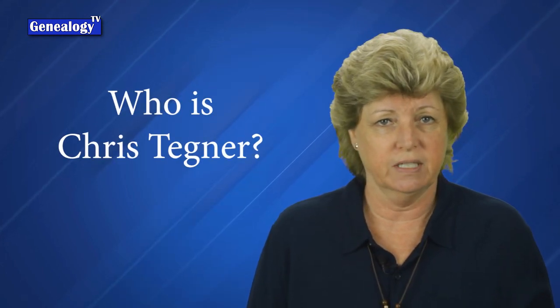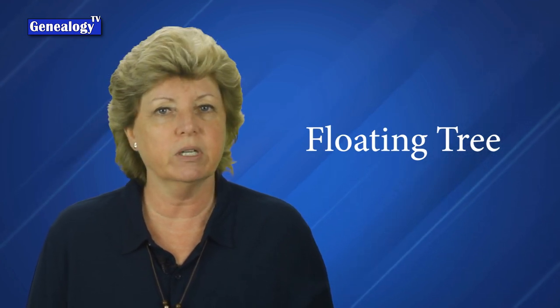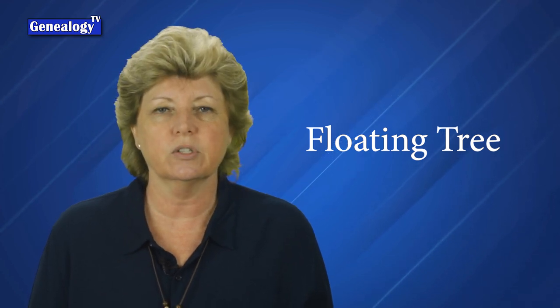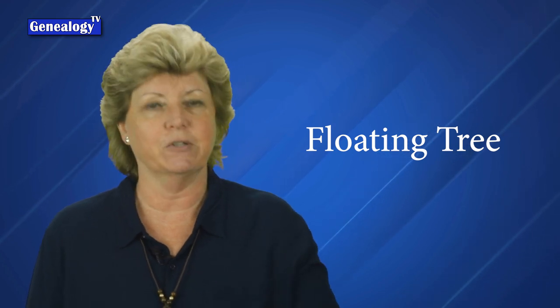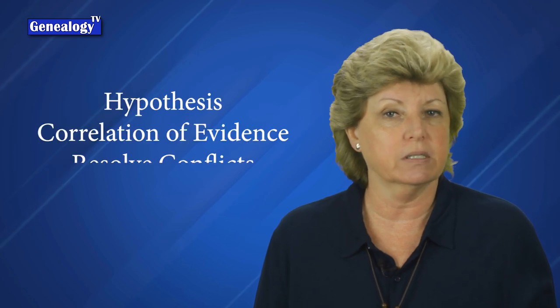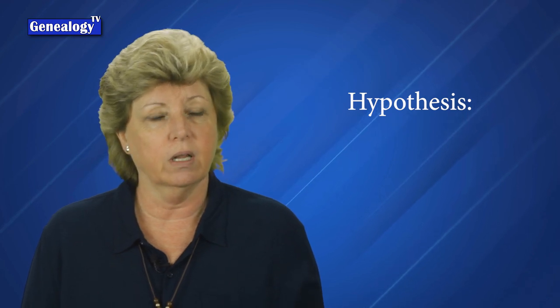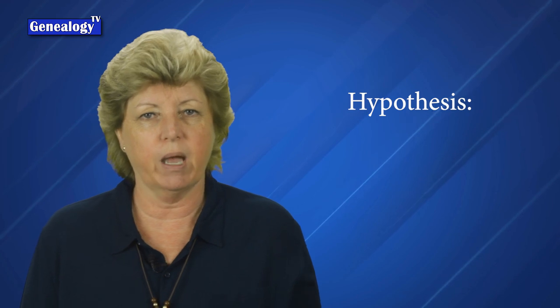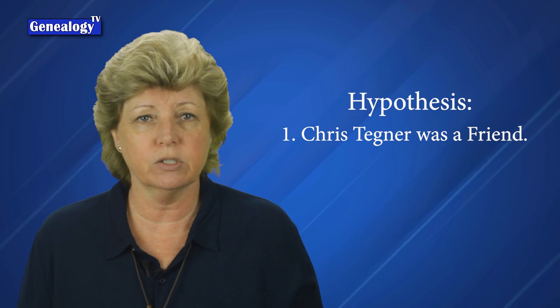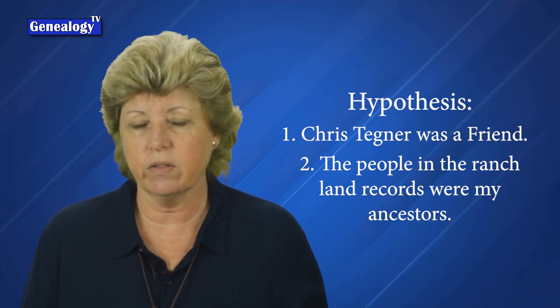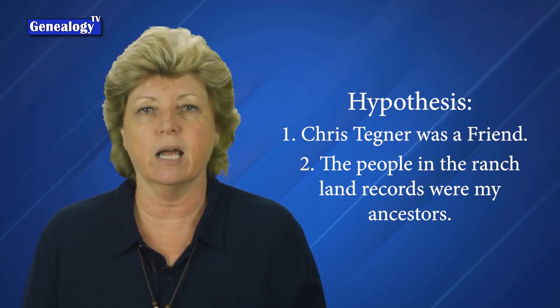So I started digging into Chris Tegner's life — this was somebody who was not part of my family. I did this by researching his name and location, and I also added him to my Ancestry.com tree by creating a floating tree. A floating tree is someone who is associated with your family but you connect them and then disconnect them, just so that you have them in your tree without creating a new tree. So my hypothesis was: Chris Tegner is a friend or a well-known associate to the Madsen family and the land records referred to in the ranch are in fact my great-grandfather Herman Madsen and his father Christopher Madsen's property. This is the hypothesis that I am now going to try to prove.